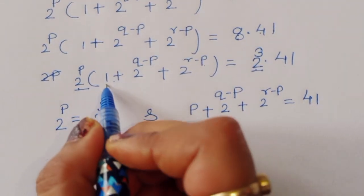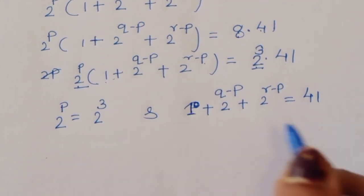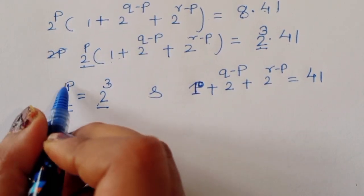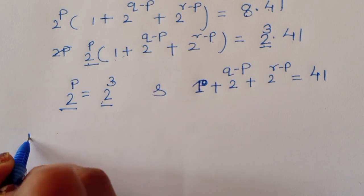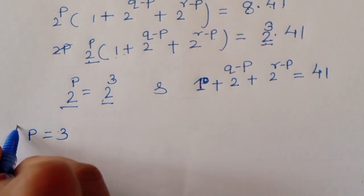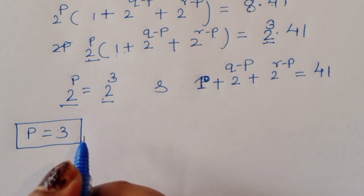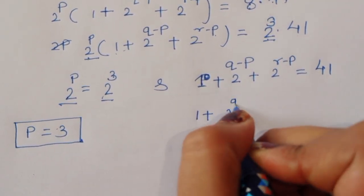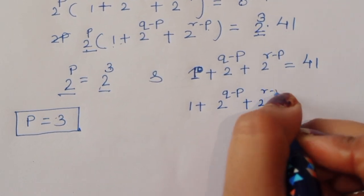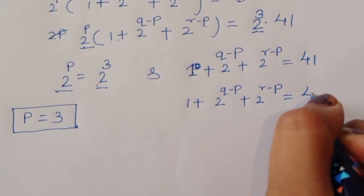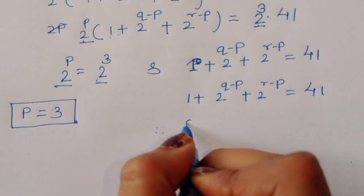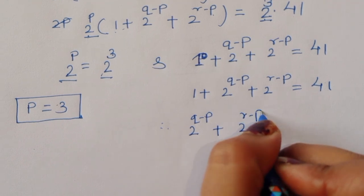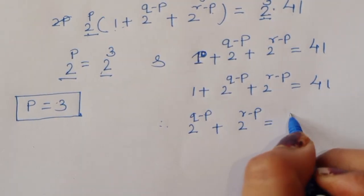Comparing 2 power P with 2 power 3, we get P is equal to 3. This is the value of P. In the next step, 1 plus 2 power Q minus P plus 2 power R minus P equals 41, so 2 power Q minus P plus 2 power R minus P equals 41 minus 1, which is 40.